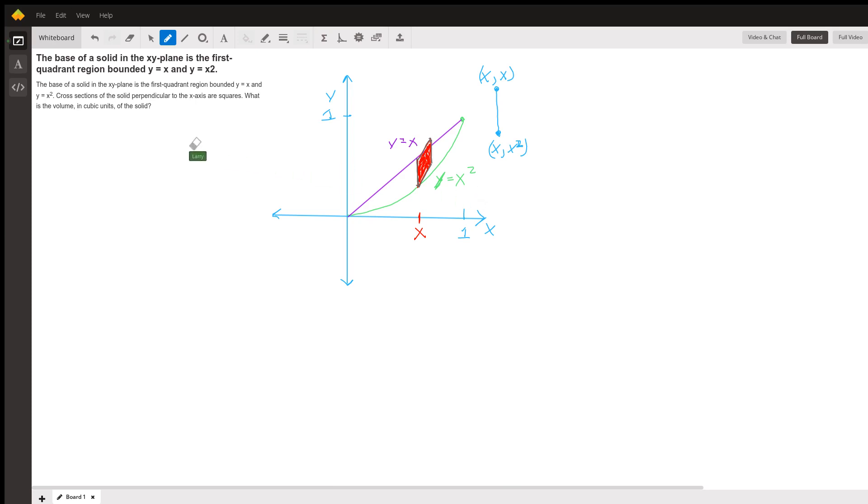So the edge of that square has a length of x minus x squared. That's the y value of the top of that line segment minus the y value of the bottom of that line segment. And that is the edge of a square.